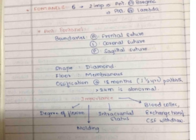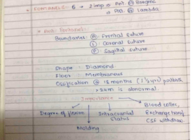The anterior fontanel is very important: internal examination can tell about intracranial status, degree of molding, synclitism and asynclitism, and degree of flexion. In emergency situations, fetal blood can be collected from here for exchange transfusions, and CSF withdrawal can also be performed from this site.